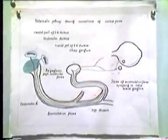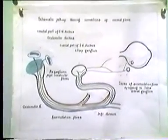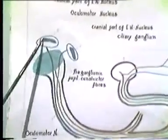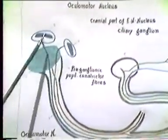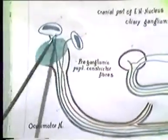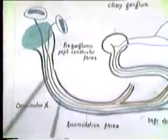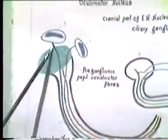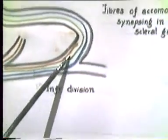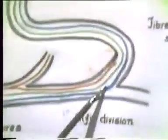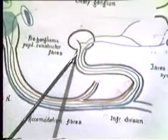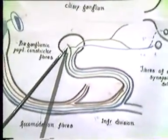Having explained the course and distribution of the oculomotor nerve, we give you an idea of the part played by the Edinger-Westfall nucleus. It is schematically shown in two parts: an anterior part for pupil constriction and a posterior part for accommodation. Both types of fibers — pupil constrictor and accommodation fibers — pass through the oculomotor nerve. They run through the lower division and leave via the motor root to the ciliary ganglion, where the pupil constrictor fibers, shown in green, synapse.